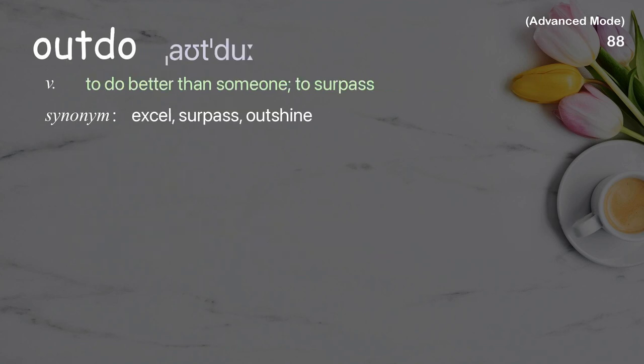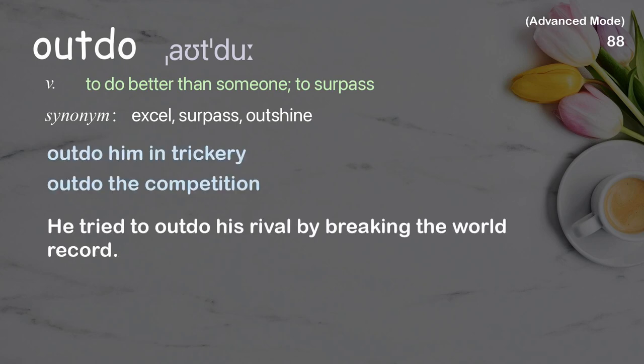Outdo: To do better than someone; to surpass. Examples: Outdo him in trickery. Outdo the competition. He tried to outdo his rival by breaking the world record.